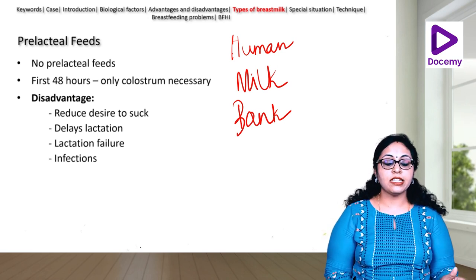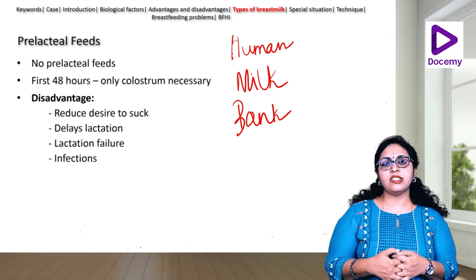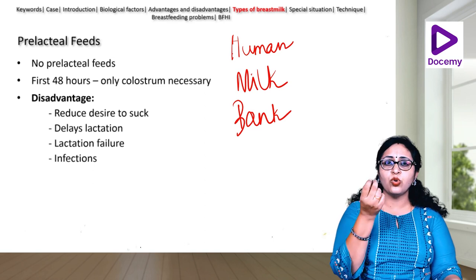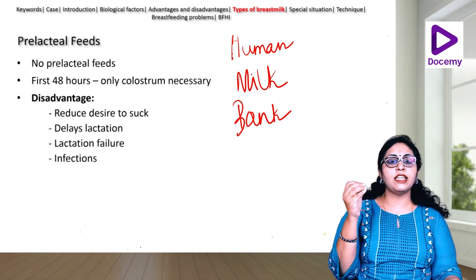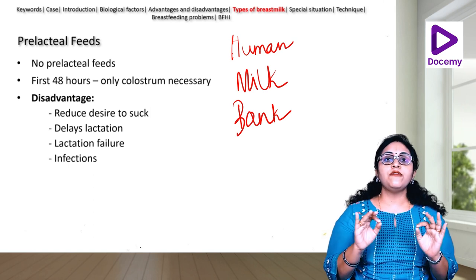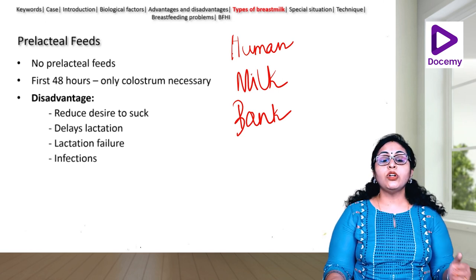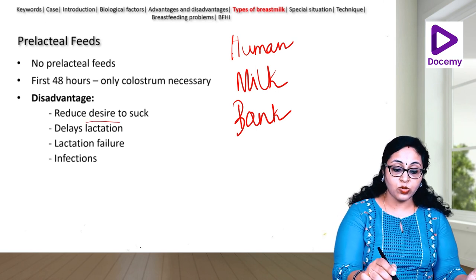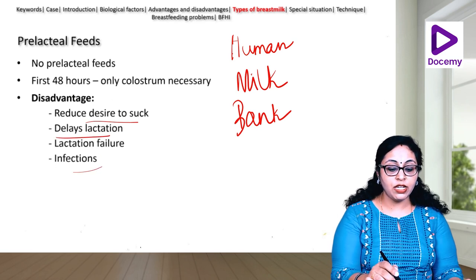Pre-lacteal feeds are feeds given prior to initiation of breastfeeding. Many customs, rituals, and religions give pre-lacteal feeds — some give gold, some give medicine, some give water or sugar. Pre-lacteal feeds should not be given to newborns, especially because they can be contaminated and cause infections. In the first 48 hours, colostrum is all that is needed — it is only what the baby requires immediately after birth. Giving pre-lacteal feeds decreases the desire to suck, decreases lactation, and causes lactation failures and more infections.